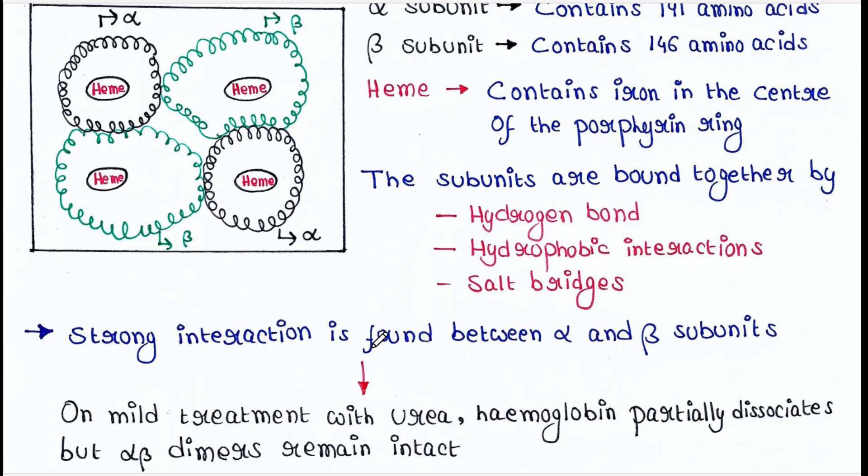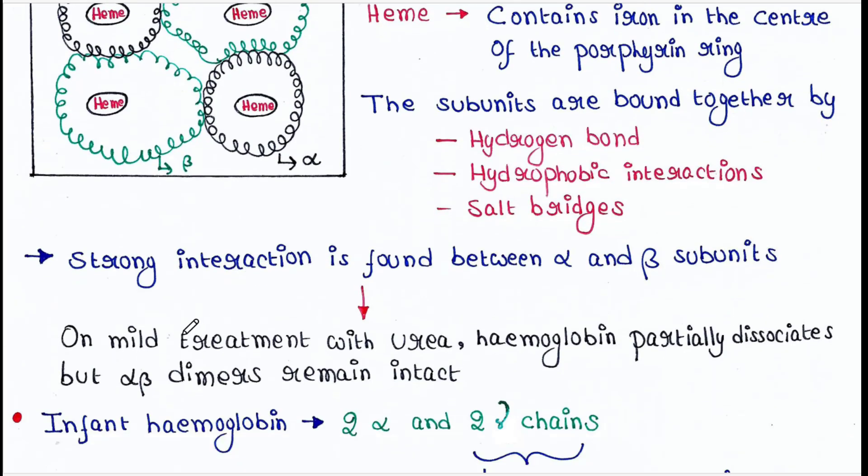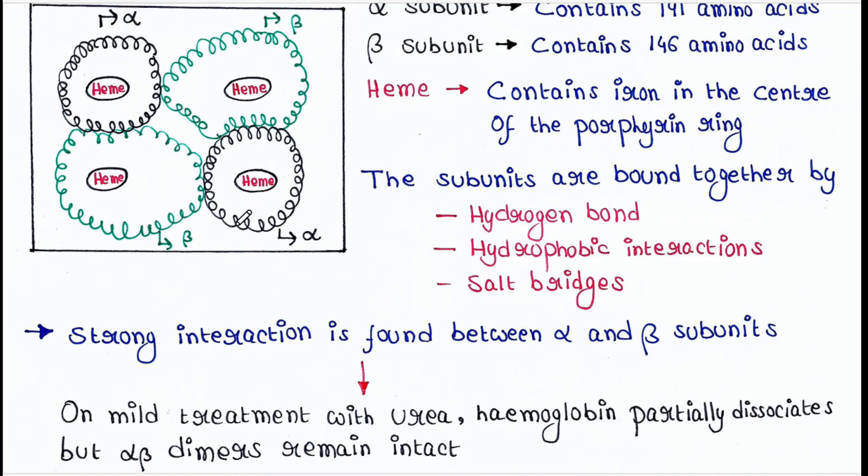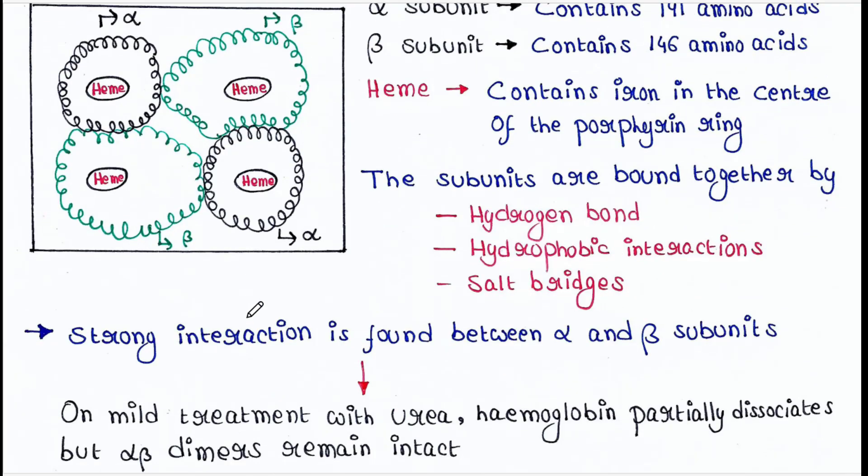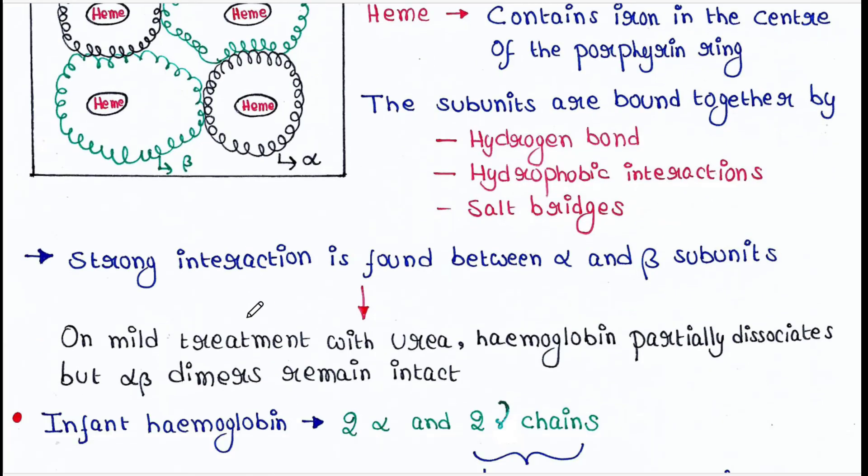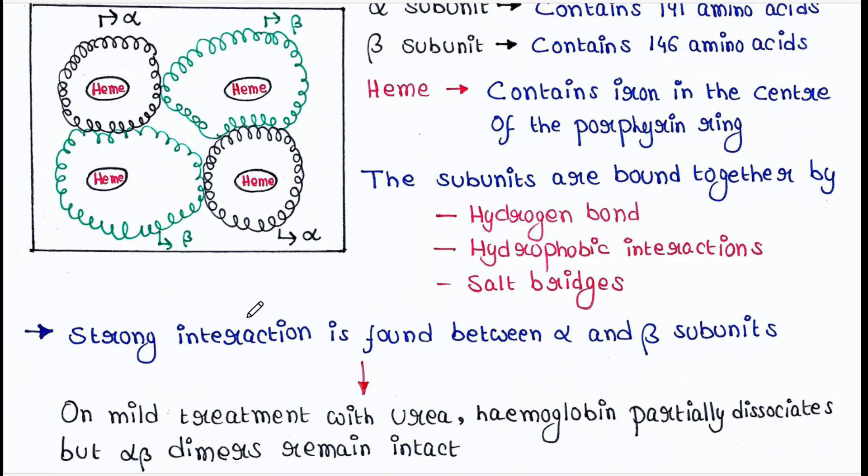Strong interaction is found between alpha and beta subunits. Hence, on mild treatment with urea, hemoglobin partially dissociates, but alpha-beta dimers remain intact. So if you treat hemoglobin with urea, the hemoglobin will be partially dissociated, but you will get two alpha-beta dimers. Why? Since they have very strong interaction.